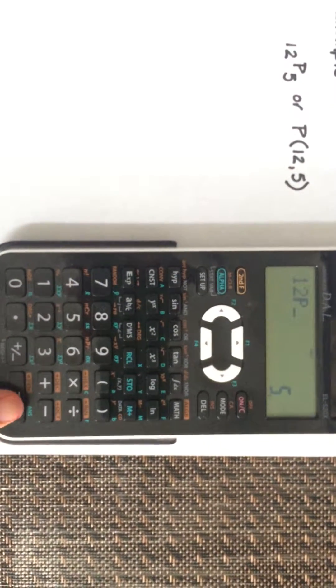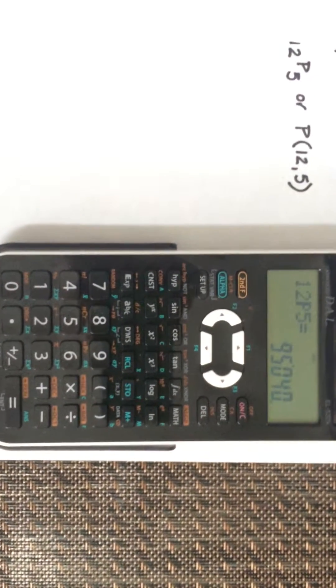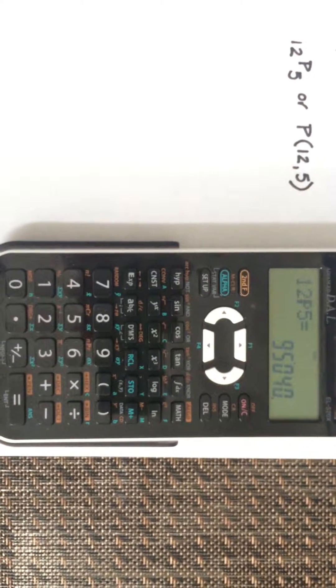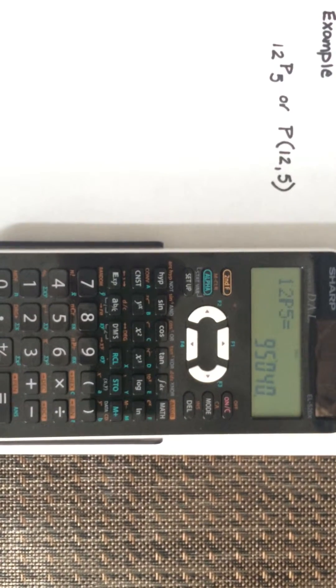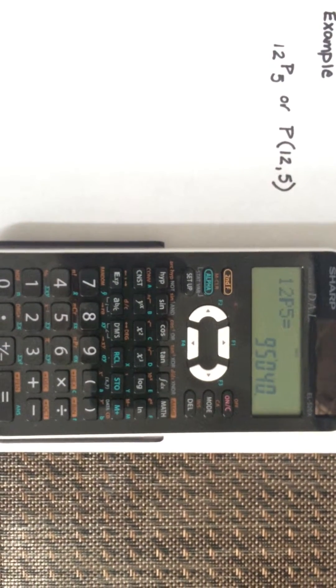Hit enter or the equal sign. There you have it, 95,040 is the answer for 12 permutation 5.